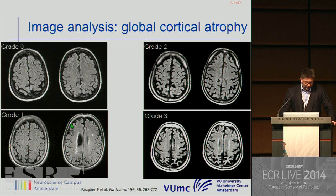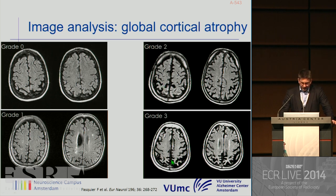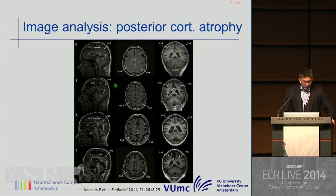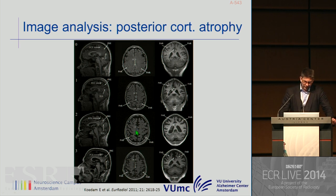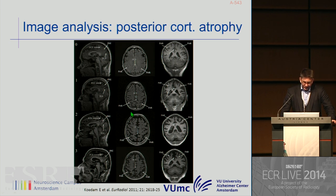We also have rating scales dealing with certain parts of the brain, like the posterior part—we call it posterior cortical atrophy. These atrophy patterns are very frequently seen in early-onset dementia but also in DLB patients. These atrophy scores deal with the posterior cingulate and the precuneus. Vascular lesions are also very important and include subcortical white matter hyperintensities as seen in small vessel disease, periventricular caps and bands, and lacunar infarctions.